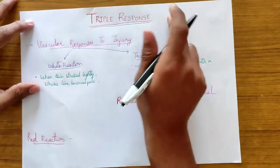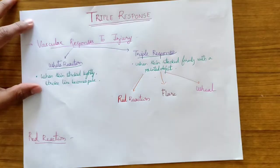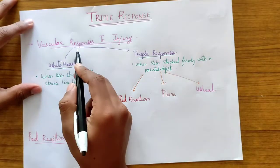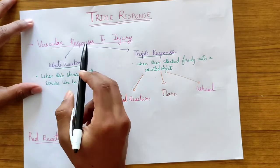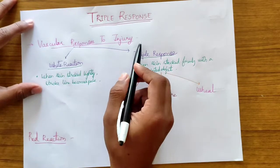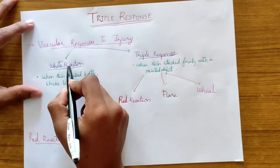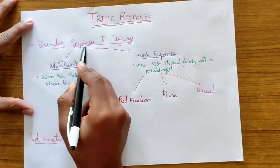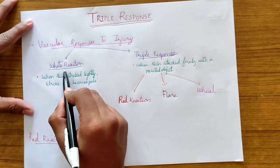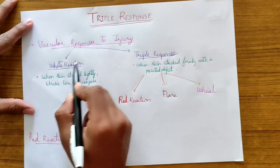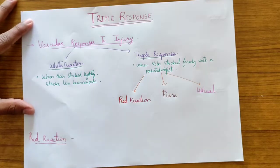Before knowing what triple response is, we should first discuss what the vascular responses to injury are. The vascular responses to injury can be divided into white reaction and the triple response.